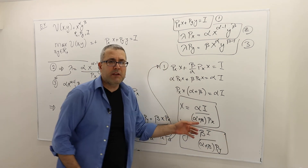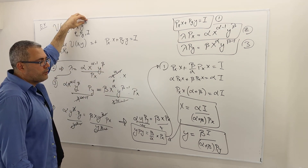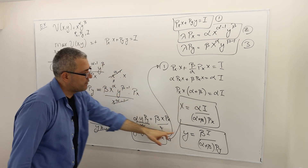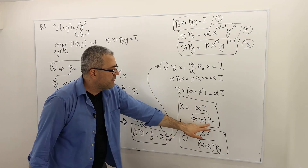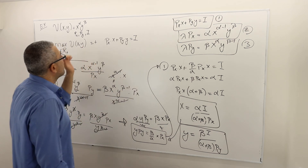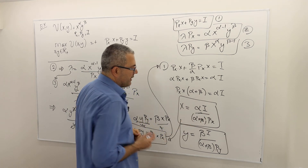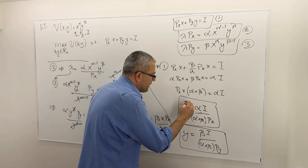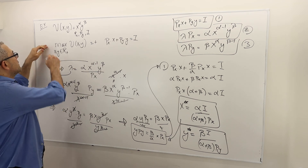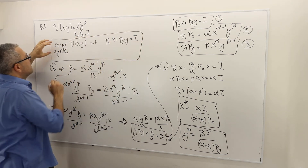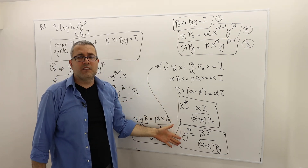The result is quite symmetric. Alpha is the exponent on x, so x* has alpha*income in the numerator. Beta is the exponent on y, so y* has beta*income in the numerator. The denominator alpha+beta is the same in both, but x* is divided by px and y* is divided by py. These x* and y* are the values that maximize the utility function subject to the budget constraint.